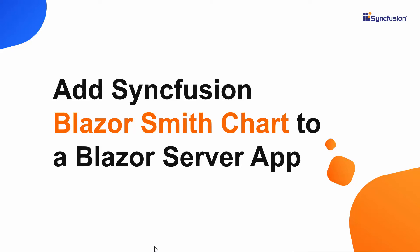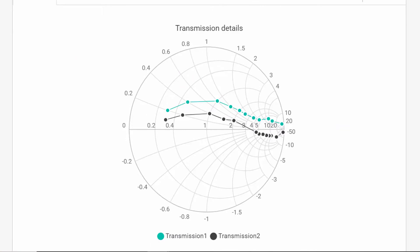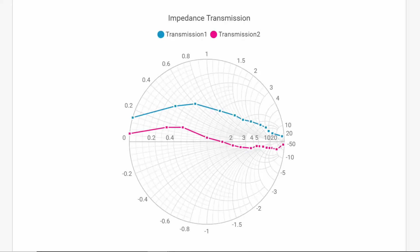Hi everyone, welcome to this video on how to get started with the Blazor Smith chart of Syncfusion. In general, the Smith chart can be used as a tool to visualize the polar plot of the complex reflecting coefficients. You can see more number of circles and arcs or some rectangle plots to visualize the transmission loss in the high frequency circuit applications. In the same way, you can use the Syncfusion Blazor Smith chart to visualize such complex data and easily analyze the comparison of transmission lines more clearly.